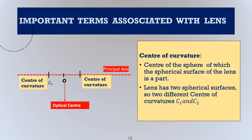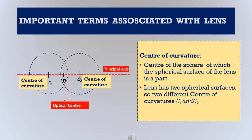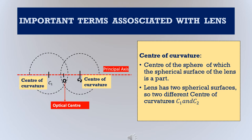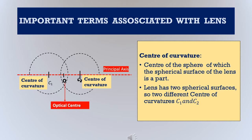A lens has two spherical surfaces, whether it is a convex lens or a concave lens. We mark the centers of those spherical surfaces as C1 and C2. These centers are known as the center of curvature — the same as we studied in the case of mirrors. The center of curvature is the center of the sphere of which the lens is a part. Since there are two spheres, there are two centers of curvature.